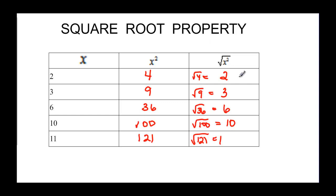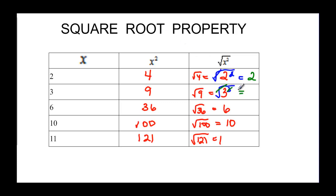Another way to think about this is: the square root of 4 is the square root of 2 squared. The square and the square root cancel each other out and you have 2. Again, this would be like the square root of 3 squared — the square and the square root cancel each other out and you're just left with 3.